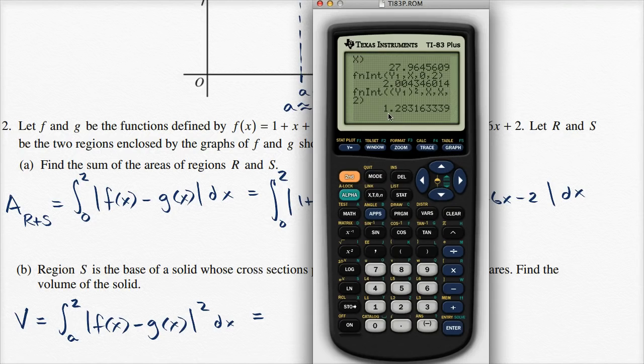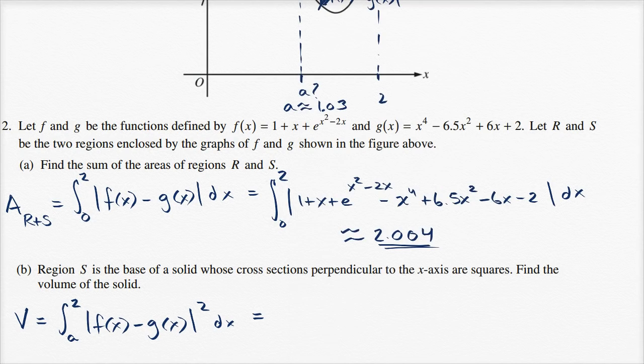And so the most complex part here is some of the shortcuts I'm doing with the calculator. And we let the calculator munch on it, and it's approximately 1.283. So it's approximately 1.283 cubic units. And we are done.